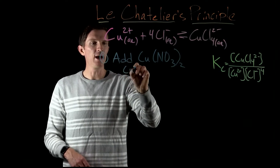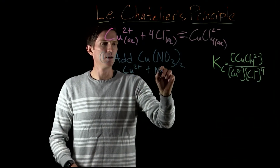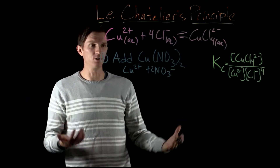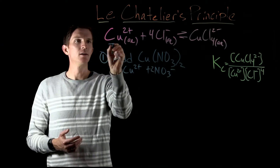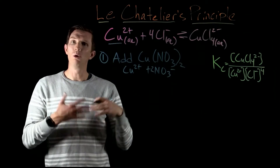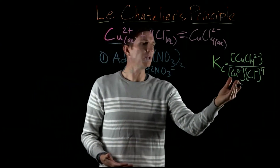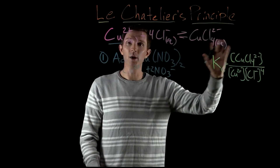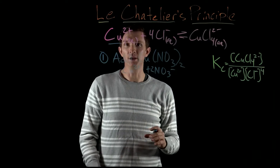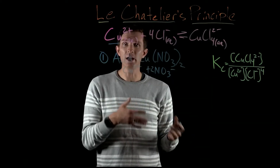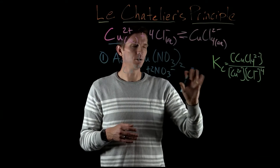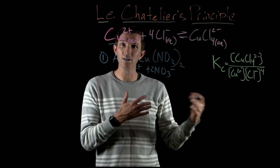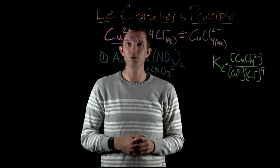By adding copper nitrate, we've effectively added copper and nitrate ions because it's soluble and will dissociate, giving us Cu²⁺. By adding Cu²⁺, we've made it so that the concentration of Cu²⁺ is too large relative to what our equilibrium concentration should be. Because of that, the ratio of our products and reactants right now would not equal our Kc value — it would be less than that because we have too great a concentration of copper.